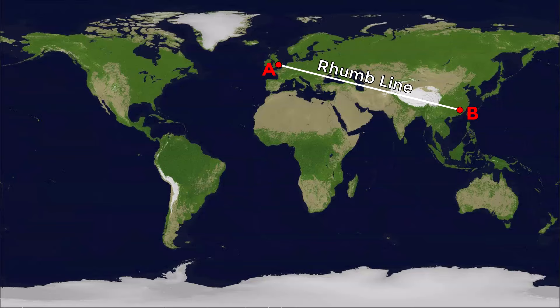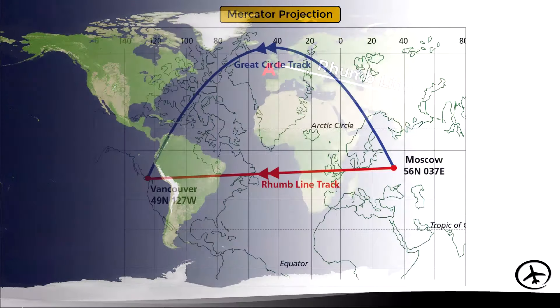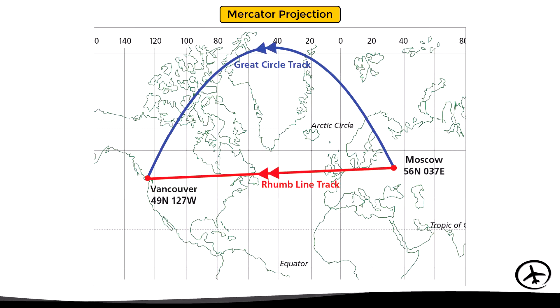So far we have said that on a map, great circles are represented as curved lines while rhumb lines are represented as straight lines. However, this is not true in all cases, since it depends on the type of projection used. For example, in a Mercator projection where the meridians are straight lines parallel to each other, a great circle is represented as a curved line because the angle between the meridians and the route is constantly changing.